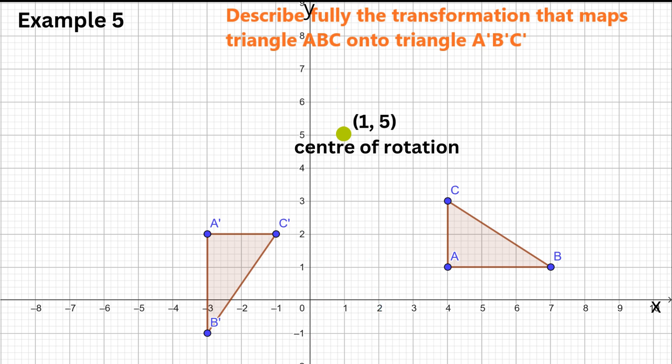Now let's determine the angle of rotation. It's the angle formed between the line from the center of rotation to any point on the original shape and the line from the center of rotation to its corresponding image point. We will use point C and its image point.